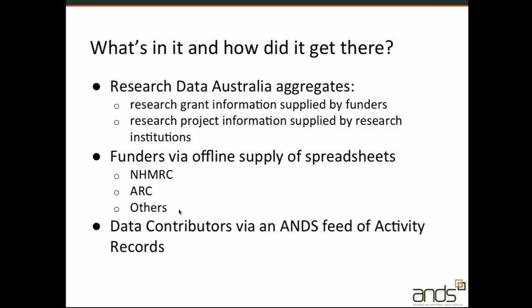The research project descriptions have been supplied as activity records in RIFCS format by our data contributors. They may have been manually entered or harvested from contributor feeds, along with collections, parties, and services. There's a good reason to have both grants and project descriptions for the same study, as information provided by the institution can be more current and may contain more detail than the grant description, which only has information supplied during the award submission. Also, many research projects are either internally funded or funded by bodies who don't supply grant information to ANS.